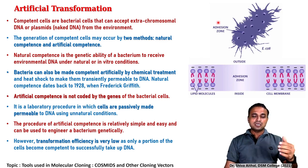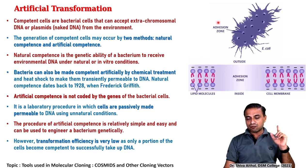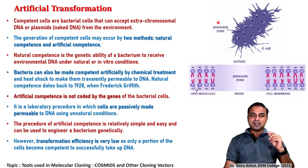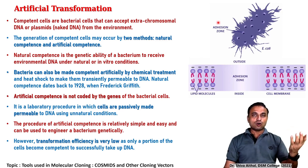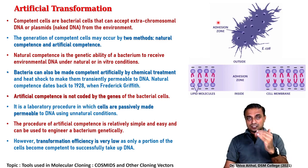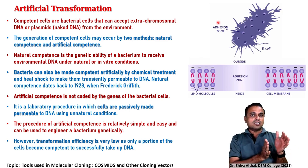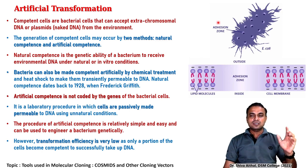Bacteria can also be made competent by artificial method using a chemical treatment, and also a physical temperature shift is used alongside the chemical calcium chloride. This is based upon the principle of Griffith's 1928 discovery of natural transformation and natural competence. Artificial competence, you should remember, is not encoded in any genes, whereas natural competence is encoded in genes. This is a very important point — and one of the main reasons why each and every bacterial cell, even if not naturally competent, can be made competent using this technique.